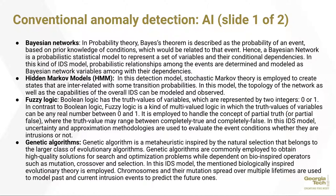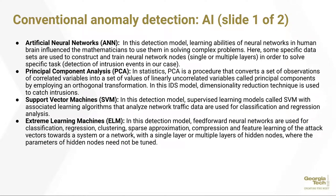Genetic algorithms use bio-inspired operators such as mutation, crossover, and selection. Artificial neural networks are becoming more and more common, using neural networks to solve complicated problems — this is AI as we talk about it. Specific data sets are used to construct and train the neural networks, which are then used for classification and detection.